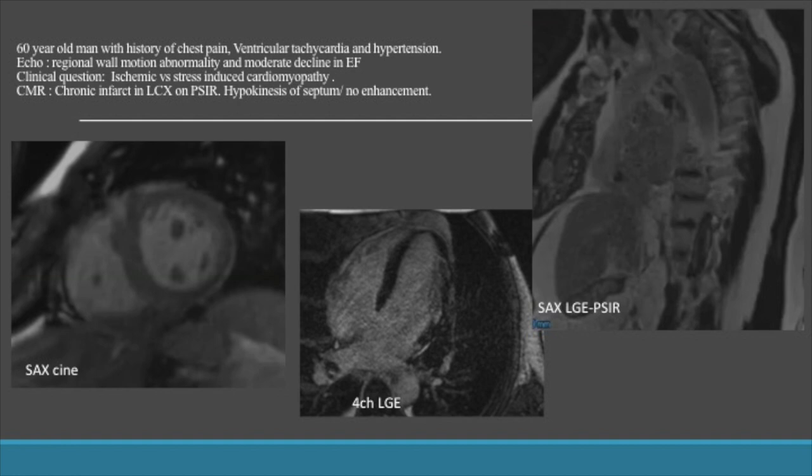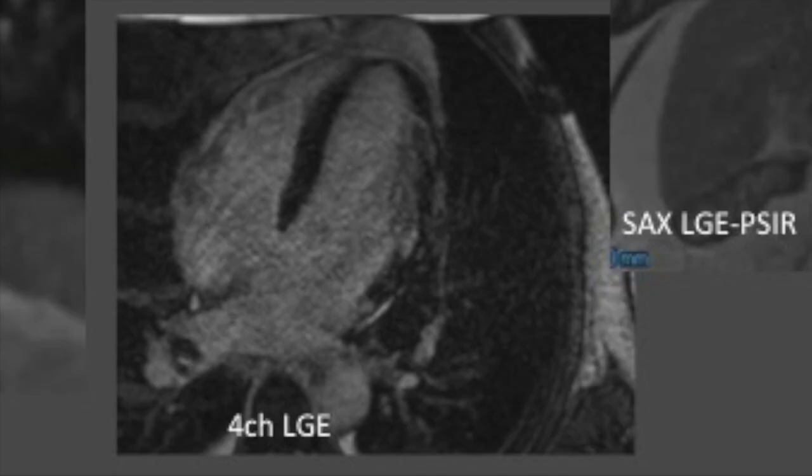A cardiac MR was obtained with all the routine sequences. The short axis cine showed thinning and akinesis of the lateral wall, and there was mild thickening and hypokinesis of the septum. The PSIR sequence showed a transmural infarction of the lateral wall.